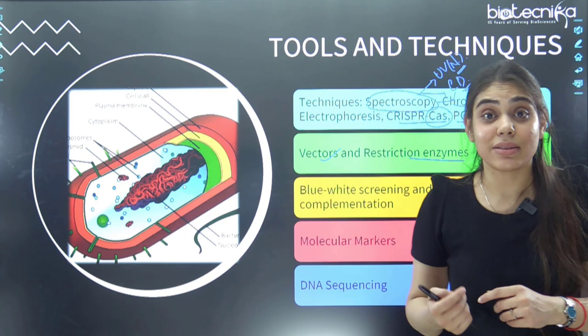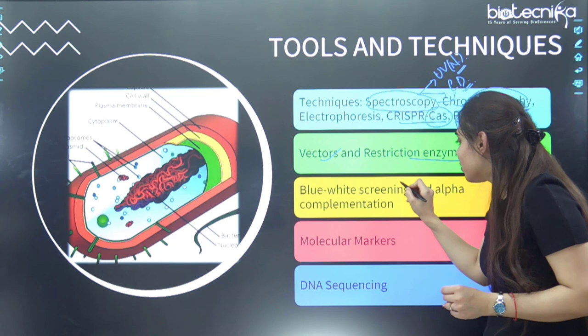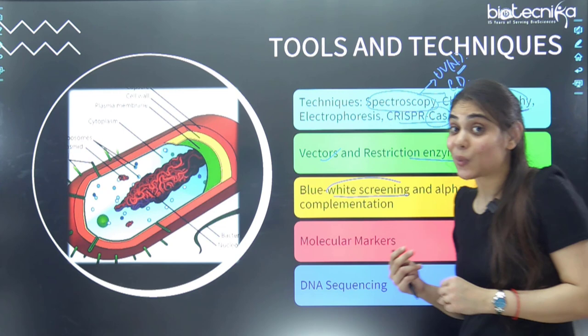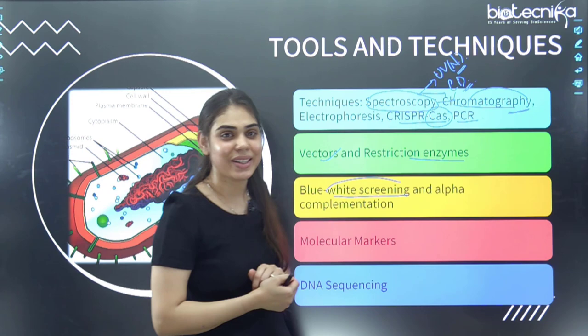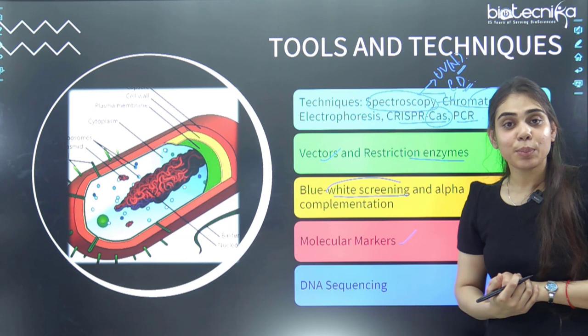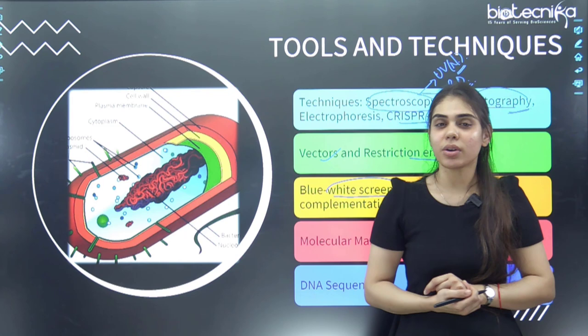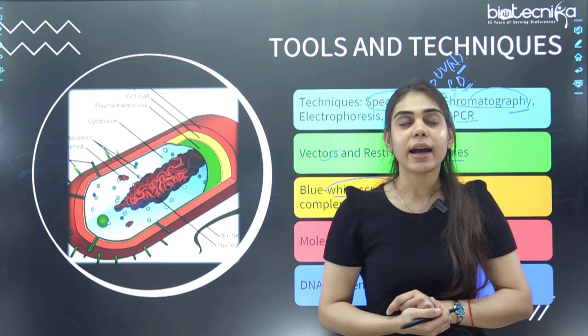Next, study blue-white screening. What is blue-white screening? If you're cloning a gene inside a cell, how would you know the gene is cloned? It is because of alpha complementation and blue-white screening. Next, study molecular markers — they generally focus on RFLP, RAPD, and AFLP, especially dominant versus co-dominant markers.